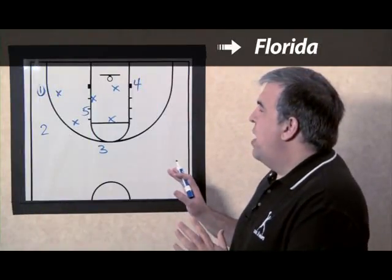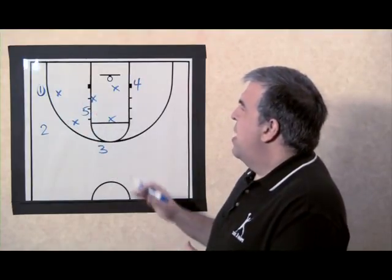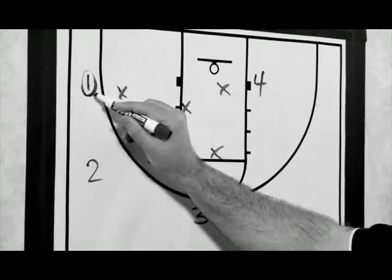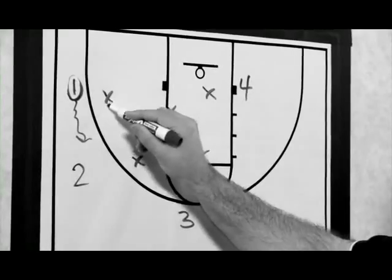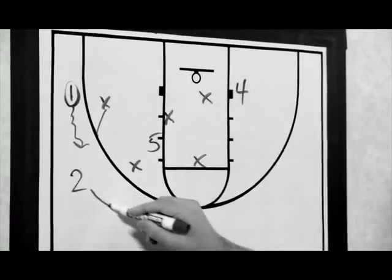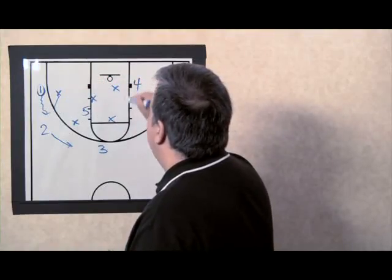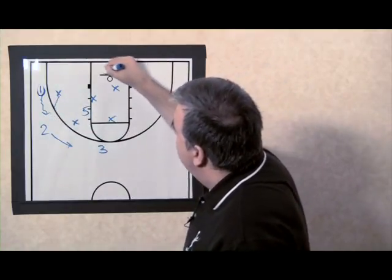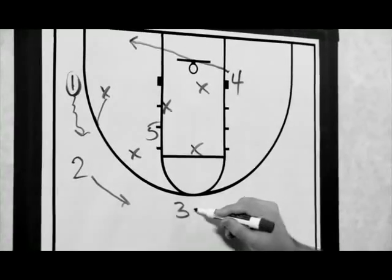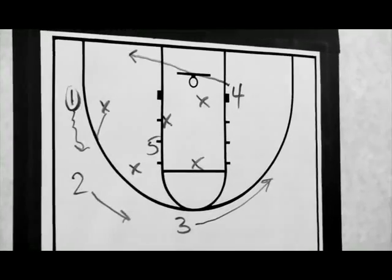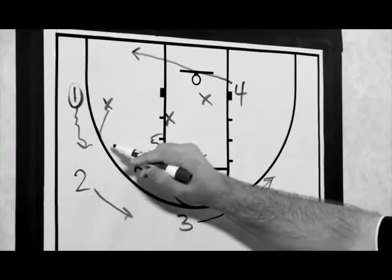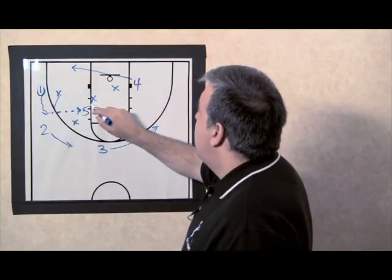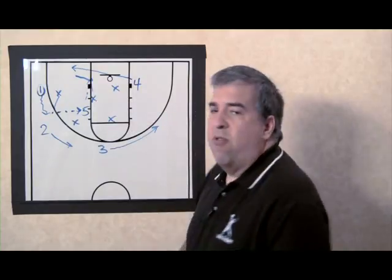Now the ball is in the corner — 1 has the ball and the zone has shifted into the 2-3 alignment. If 1 is not able to pass into 5 at the mid post, 1 is going to dribble up. This is designed to pull the wing defender in the back of the zone up and empty the short corner area. We're going to utilize a principle called leave and replace: as 1 leaves that area, 4 is going to slide over and replace in the short corner. 3 slides along the perimeter on the three-point arc, and 1 looks for either 4 in the short corner or can pass to 5 in the mid post if open. Then 5 can look to hit 4 stepping into the basket for the layup.